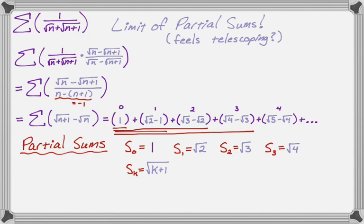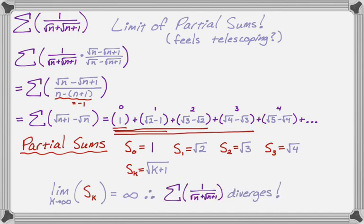And so that's always the kth partial sum. So what I can do is I can take the limit as k approaches infinity of the partial sum. And that is definitely just infinite. So square root of infinity plus one, definitely infinite. And since the limit of the partial sums does not converge to anything, we automatically know that the summation, the series itself diverges.